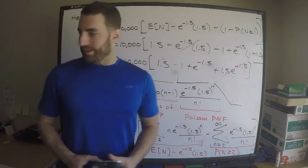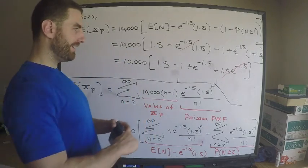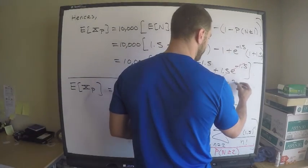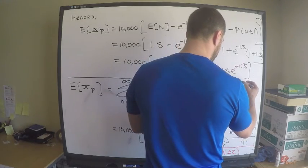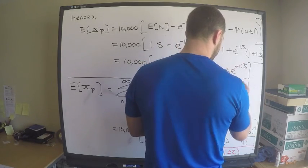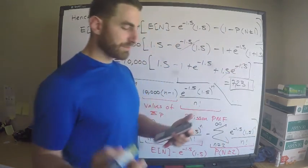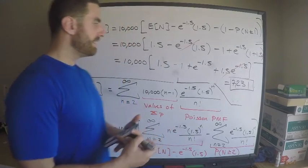Let's see what happens if I plug this in. And this looks like 10,000 times 1.5 minus 1 plus e to the negative 1.5. And I get 7, 2, 3, 1. And that is the right answer. Woo! Yeah, that's right. So 7, 2, 3, 1 with a decimal, 0.3.